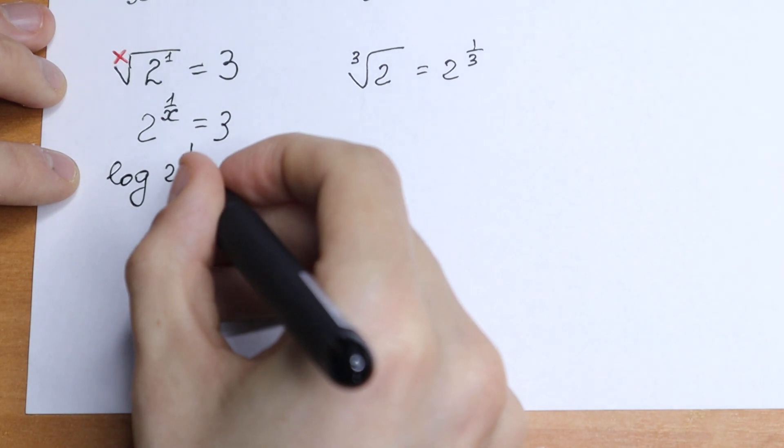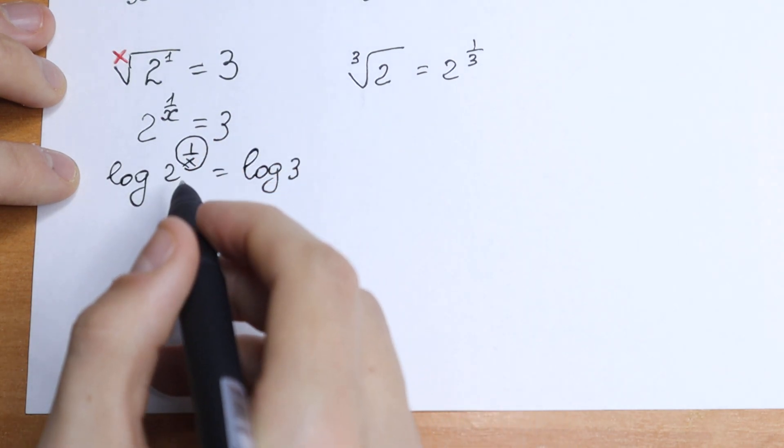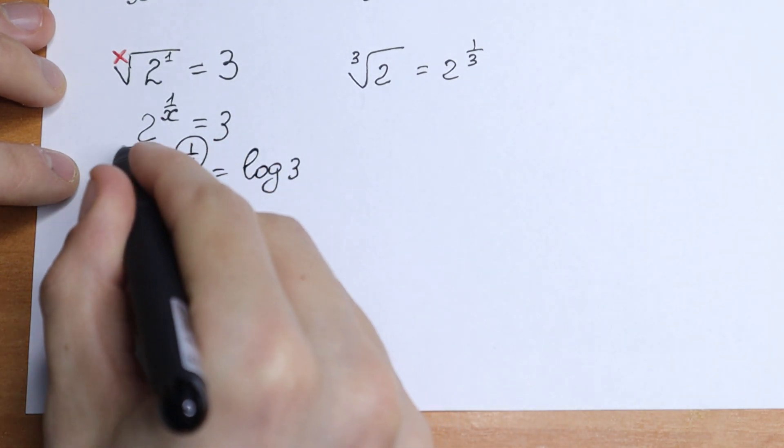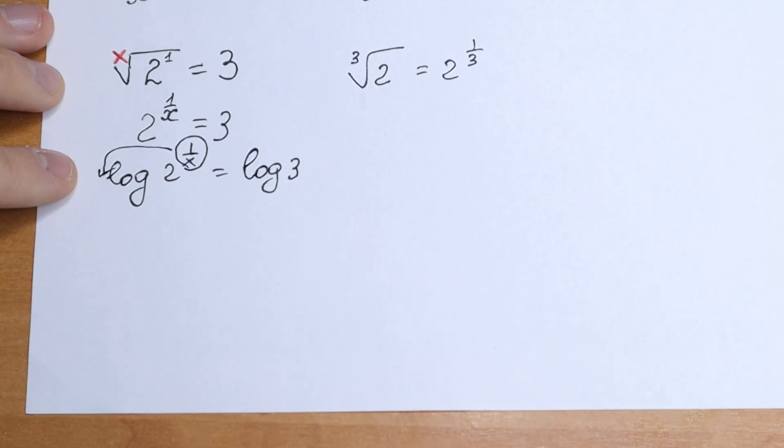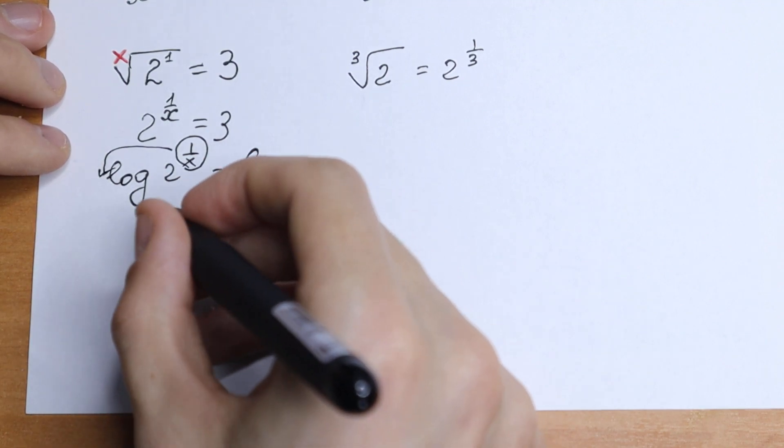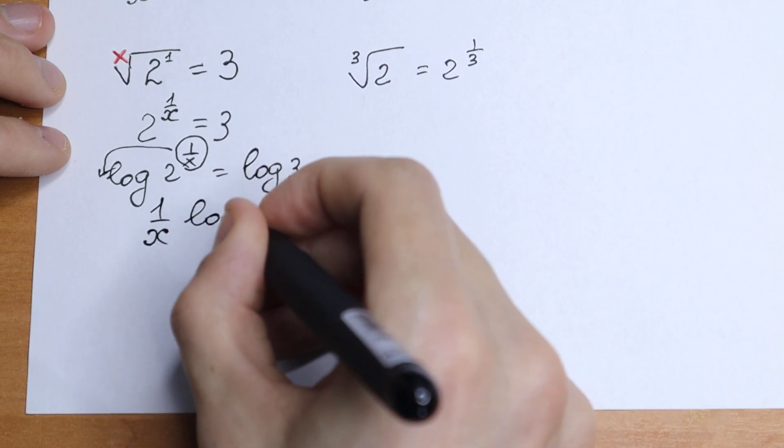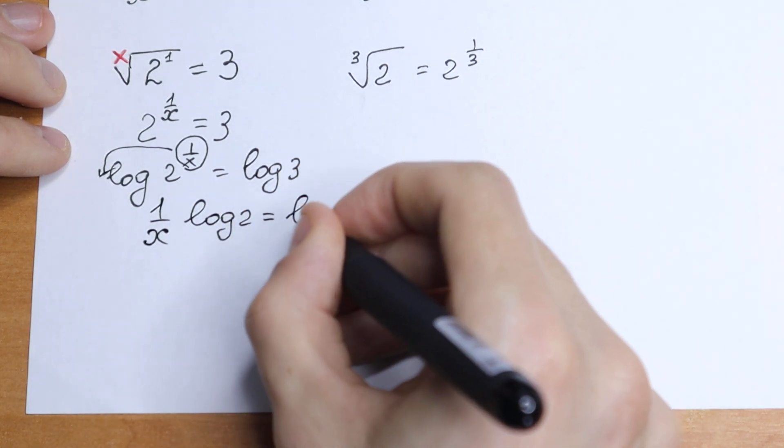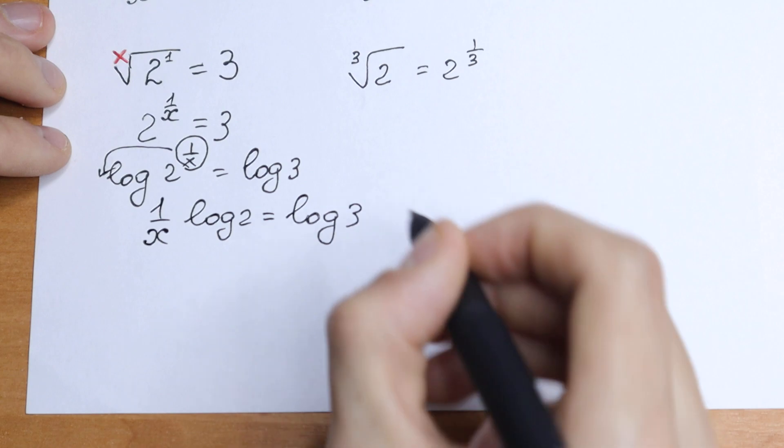Log 2^(1/x) and log 3. As you know, this power, this exponent, if you're talking about log, jumps right here in the beginning. So as a result we will have 1/x times log 2 equal to log 3.